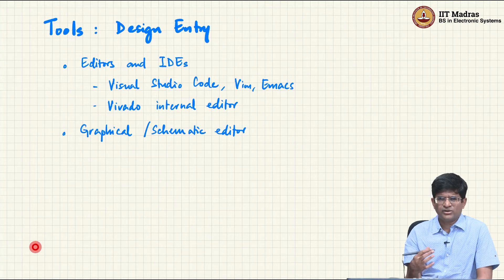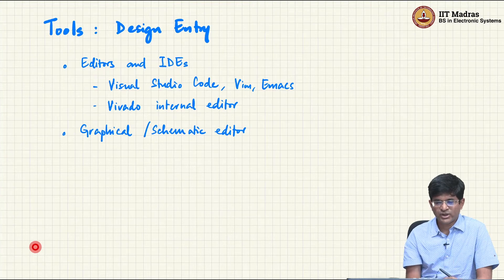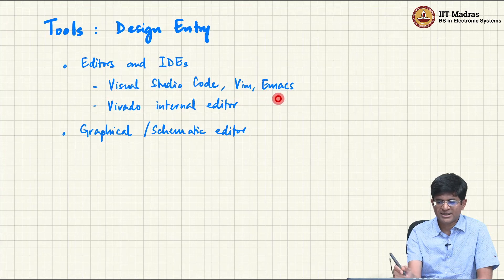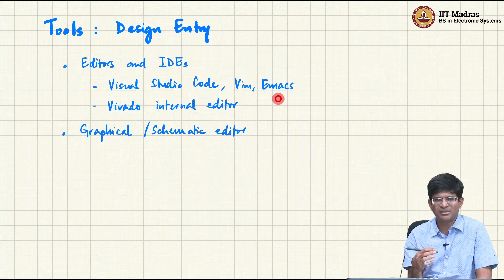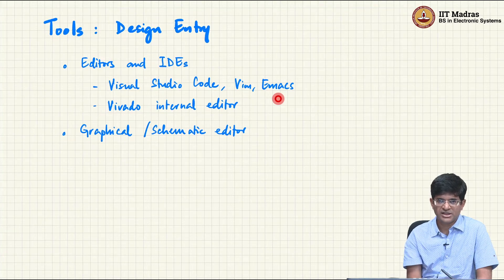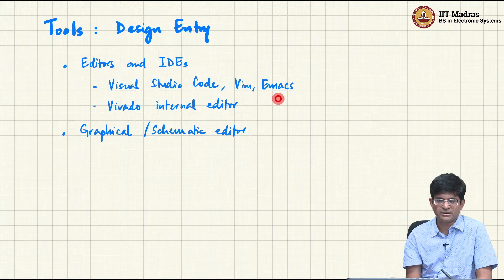At a high level, the kinds of tools we can look at for design entry include editors such as Visual Studio Code, Vim, and Emacs, which are very popular and well known. Something like Notepad on Windows is not a good editor for this because it has a number of quirks and limitations that make it very difficult to effectively write code for large designs. It is well worth investing a little time learning a good editor and seeing how to use it appropriately.